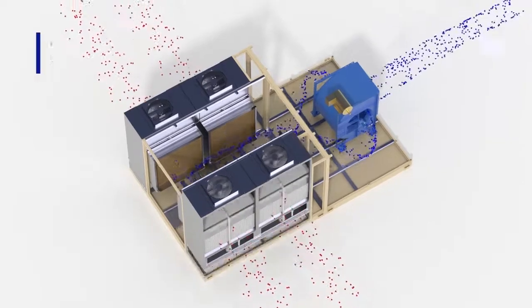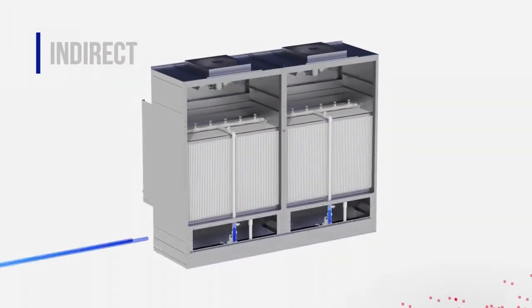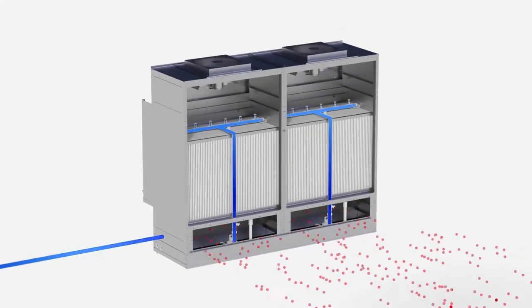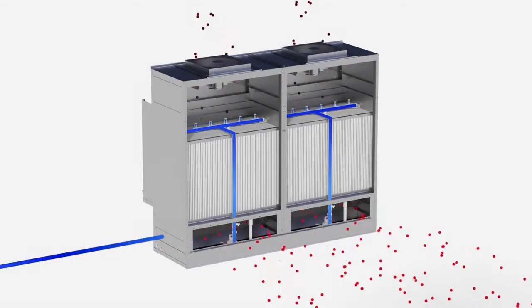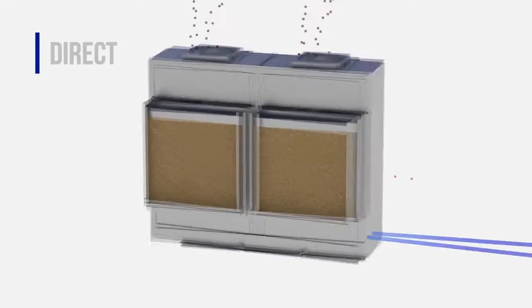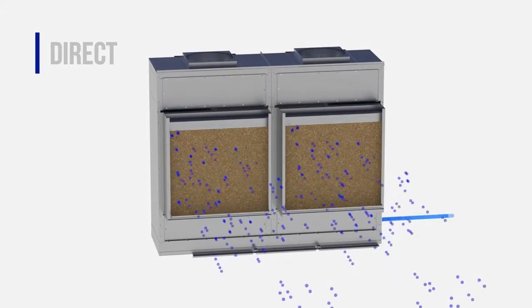An indirect evaporative cooling module provides the first stage of cooling. A patented polymer heat exchanger separates the ventilation airstream from the vaporizer airstream resulting in full sensible cooling without any added moisture. The second stage of cooling provides additional temperature depression through the adiabatic direct evaporative process.